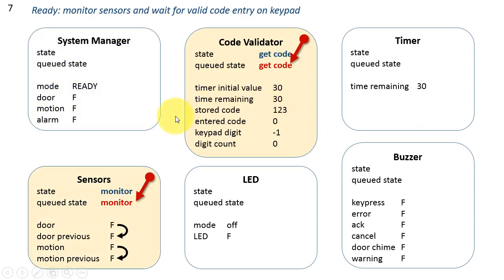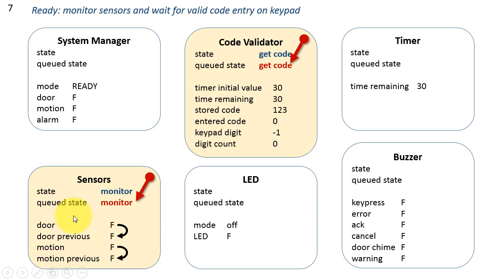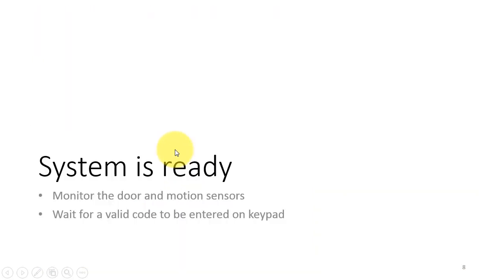Advancing time, the sensors task has now moved into the monitor state. In the monitor state, it samples the input sensor — door presently set to false — and stores that in the variable door previous. Similarly, it samples the motion sensor presently producing false and saves that as motion previous. Sensors is also self-enqueuing the same monitor state again — another regenerative state — because the sensors process needs to keep examining door and motion sensors. The system is now ready and monitoring.